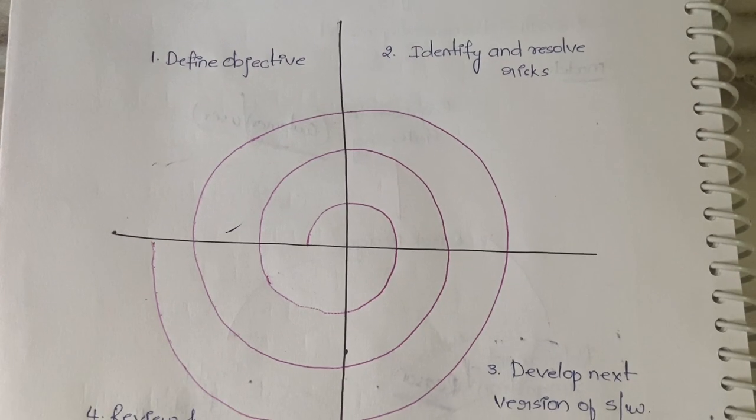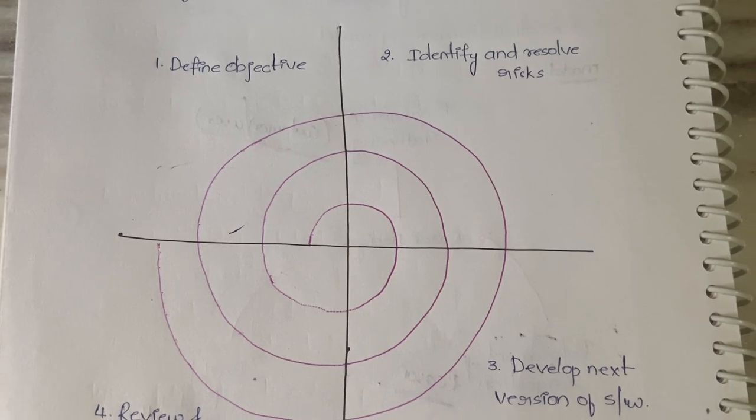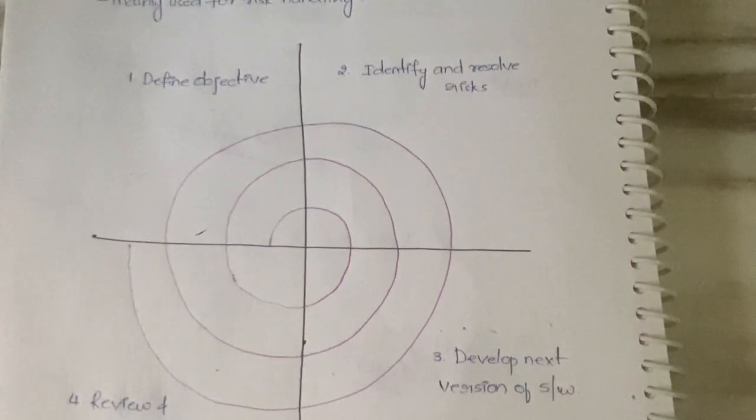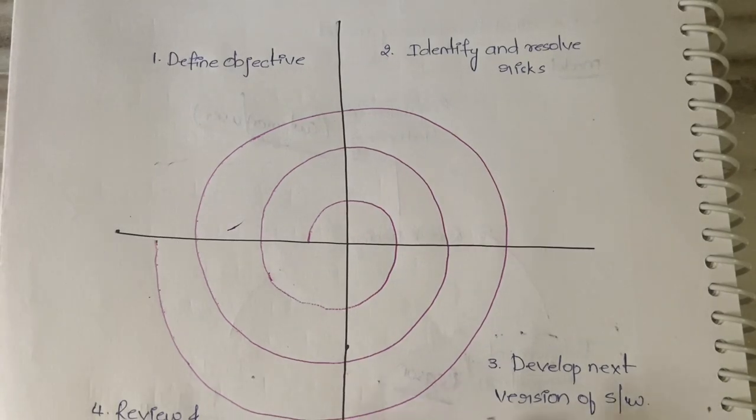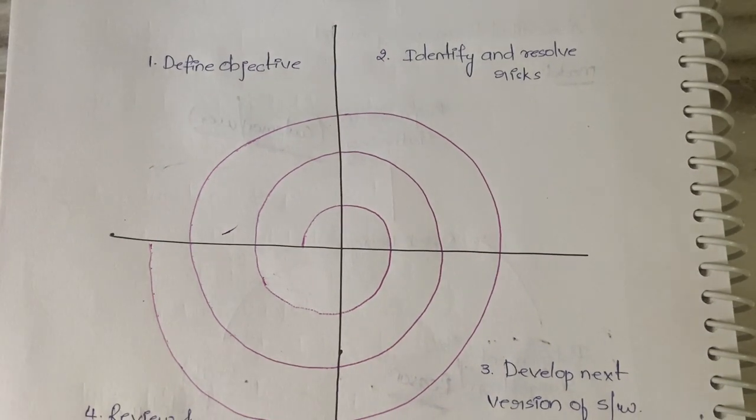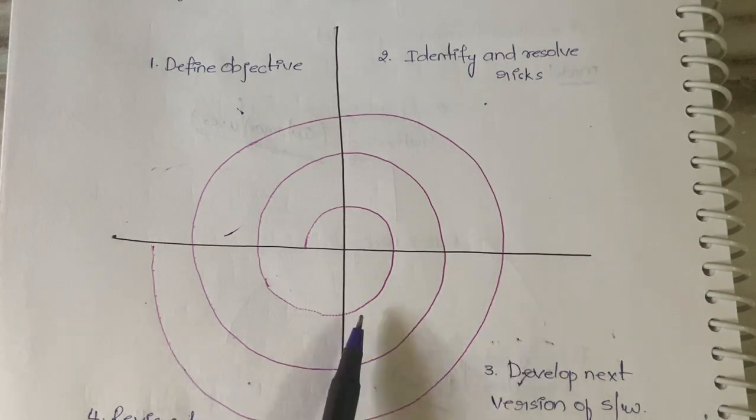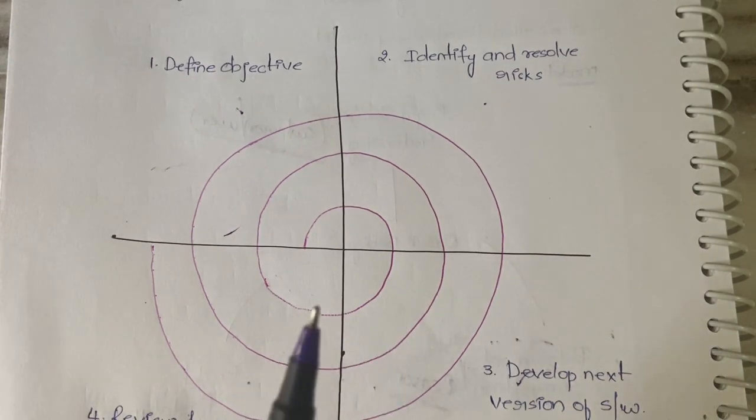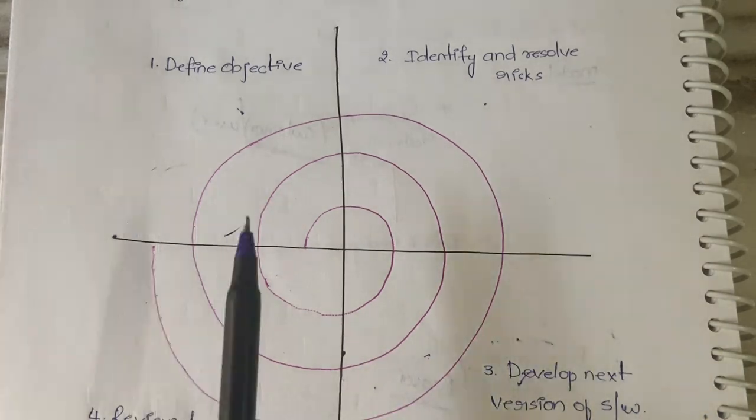Now let's see the diagram with which you can understand it more clearly. This is the diagram - we have four stages, four quarters: one, two, three, four. Don't get confused. In coordinate geometry we have one, two, three, four, but here it's one, two, three, four like this.